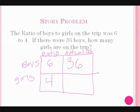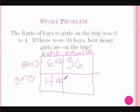So now we think how many times 6 can go into 36. That's 6, so we write times 6 in the middle. Now all we have to do is bring down the times 6. So what is 4 times 6? That is 24. So our answer would be 24 girls.